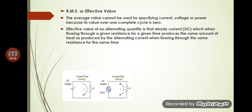Since DC is constant it produces more heat than an AC of the same nominal value. To compare them fairly, we use the same resistance and the same time period. The question is: what AC current produces the same amount of heat as the DC supply? That amount is referred to as the effective value or RMS value.